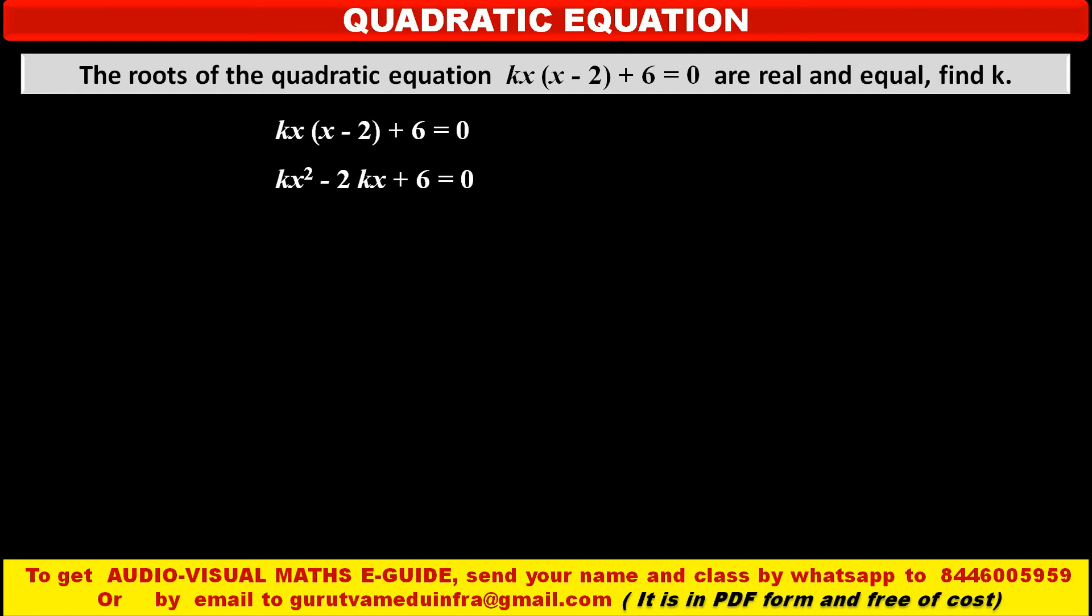Now this is like general form of quadratic equation. So comparing this with its general form, ax square plus bx plus c is equal to 0, and equating their corresponding terms, we get a is equal to k, coefficient of x square, b is equal to minus 2k, coefficient of x, and c is equal to 6.